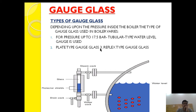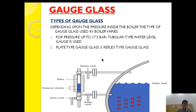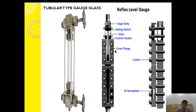For higher pressure ranges, the plate type gauge glass and reflex type gauge glass came into the picture. The reflex type gauge glass is used from medium to high pressure range, and the plate type gauge glass can be used in all types of boilers — medium, high — because the pressure range of the plate type gauge glass is around 70 bar, and the reflex type gauge glass pressure range is around 21 bar.